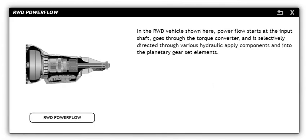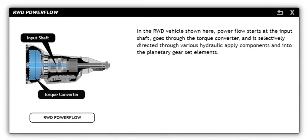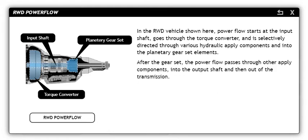In the rear wheel drive vehicle shown here, power flow starts at the input shaft, goes through the torque converter, and is selectively diverted through various hydraulic apply components and into the planetary gear set elements. After the gear set, the power flow passes through other apply components, into the output shaft, and then out of the transmission.